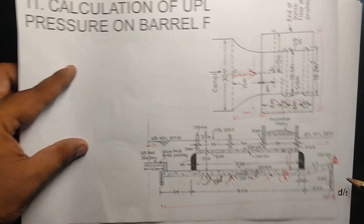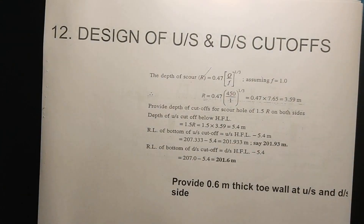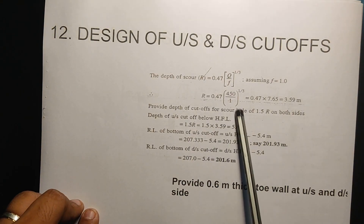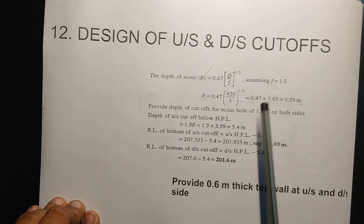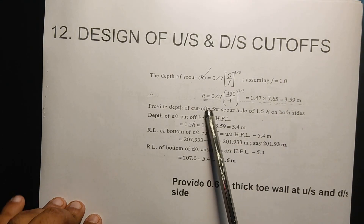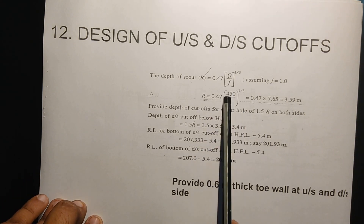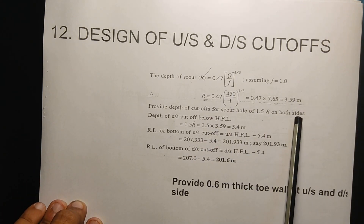The depth of scour is given by R = 0.47 × (Q/F)^(1/3), assuming F is equal to 1. Therefore, with discharge Q = 450 and the drainage location, R is equal to 3.59. The provided depth of cutoff is 1.5R on both sides.